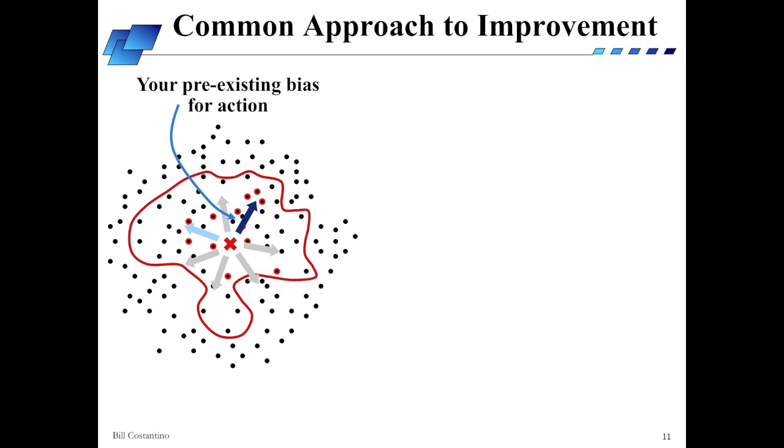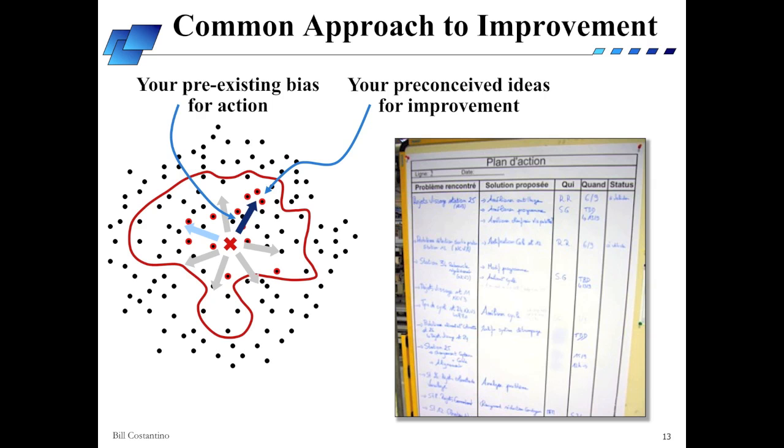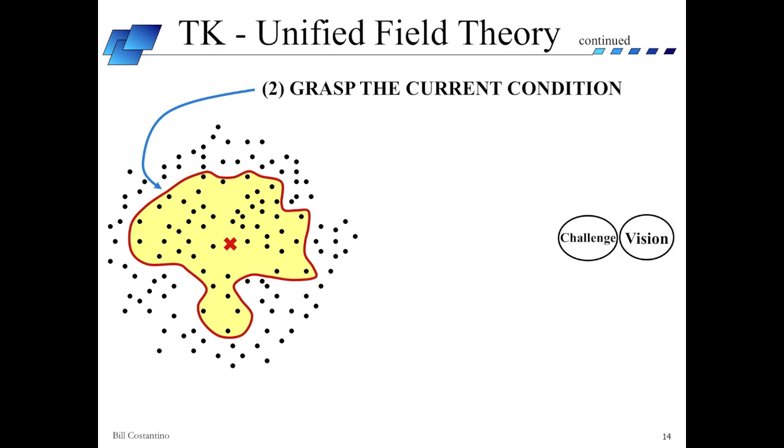So in a more traditional environment, we have our pre-existing bias for action contained within our current knowledge threshold. We have our ideas for improvement based on our waste walk. If we have a strong base of experience, we may have strong preconceived notions about what needs to happen and how things need to be done. Traditionally, we'd simply translate this into an action item list and get into implementation mode, getting to work to make things better. But wait! At this point, Toyota Kata would ask us to shift our paradigm.